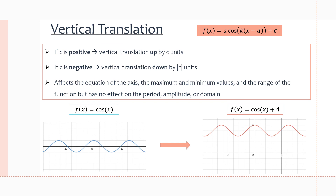First, let's go over vertical translation, which is done through the number c. It's added to the cosine ratio and is at the end of our transformation equation. If the c value is positive, then we're going to vertically translate up by c units. If c is negative, then it becomes a vertical translation down by the absolute value of c units.